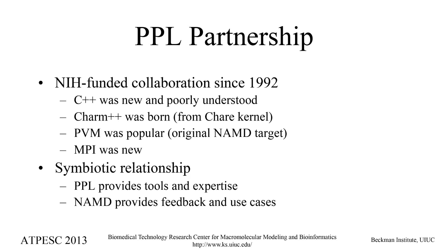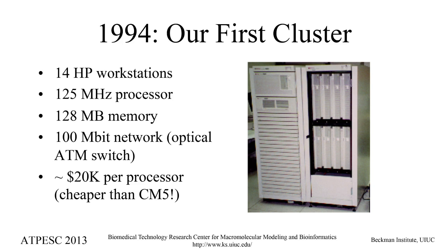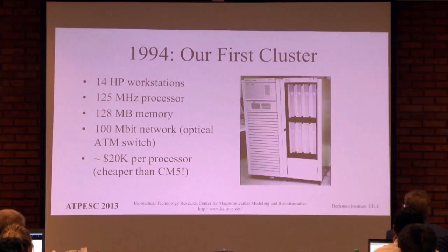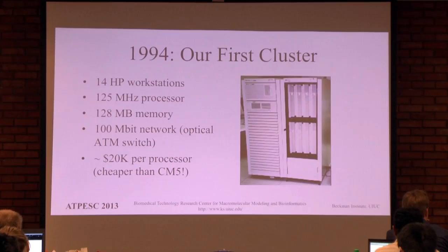This is a symbiotic relationship: PPL provides tools and expertise, and the NAMD development effort provides feedback, realistic test cases, and use cases that drive development of new tools within Charm++. In 1994, our cluster was 14 single-processor HP 735 workstations — as fast as a Cray for certain codes, 128 megs of memory, a super-fast optical network, about $20,000 apiece. The competing proposal was to pool our money with NCSA to purchase a Connection Machine 5. The grad students decided to go with the workstation cluster instead.